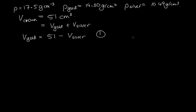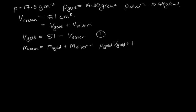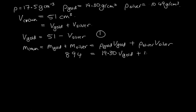We also know the mass of the crown. The mass of the crown equals the mass of gold plus the mass of silver. The mass of gold is the density of gold times the volume of gold, and the mass of silver is the density of silver times the volume of silver. So we have: 894 grams equals 19.30 times the volume of gold, plus 10.49 times the volume of silver.